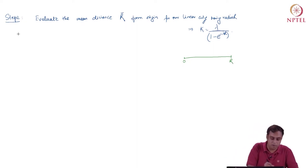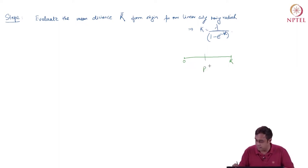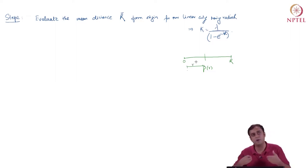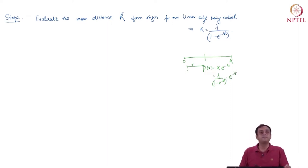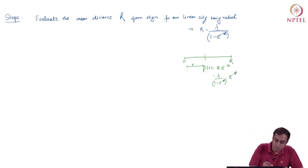We want the first moment r̄. We have a probability p(r) — the probability of observing a location marker — given as k times e to the power minus lambda r, where k has been evaluated as lambda over (1 minus e to the power minus lambda capital R). So p(r) equals lambda over (1 minus e^{−λR}) times e^{−λr}. Let us move forward.